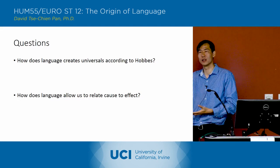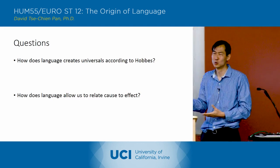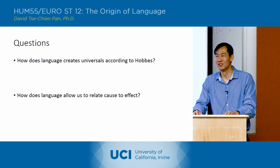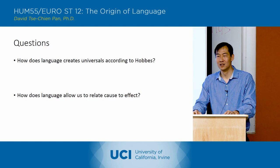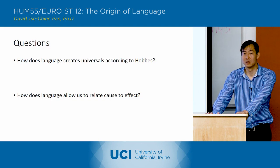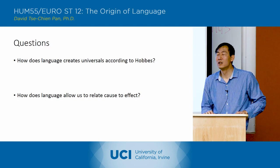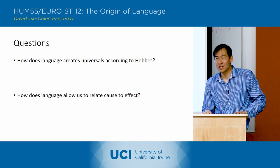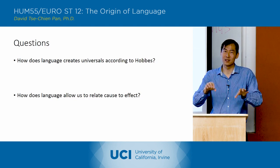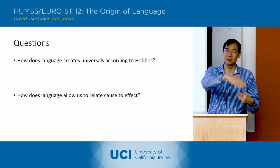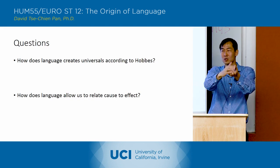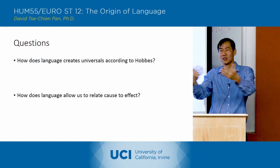And then how does language allow us to relate cause and effect? Did somebody want to take a shot at that? Relating the particulars of each category to one another. That's good. So what's important is that the specific instances are linked up to the general case. There are two movements: linking the specific instance to a general case, and then linking the two general cases to each other.